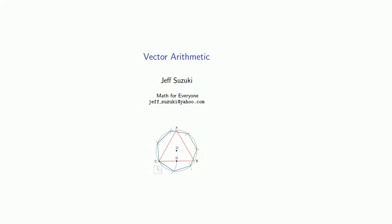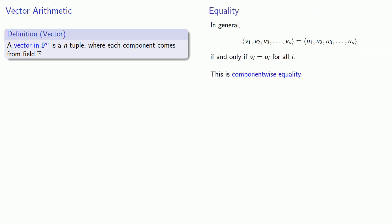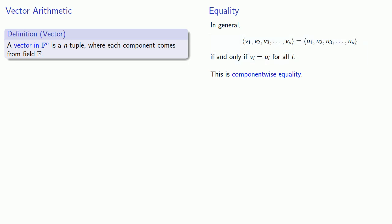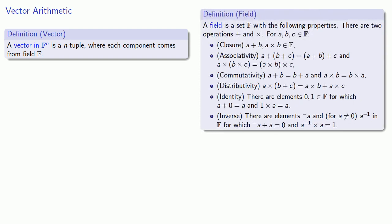Let's see if we can define some vector arithmetic. Since we've defined a vector as an n-tuple whose components come from a field F, we can define the equality of vectors the same way we define the equality of n-tuples — the corresponding components must be equal. Because the components come from a field, both addition and multiplication are defined for those components, so we can define arithmetic operations as well. We'll define these operations component-wise.